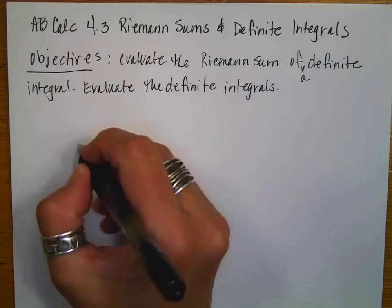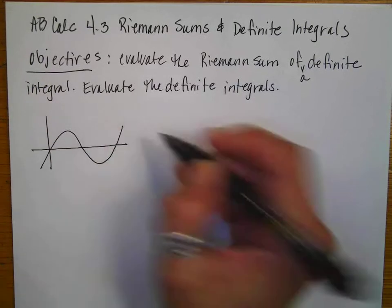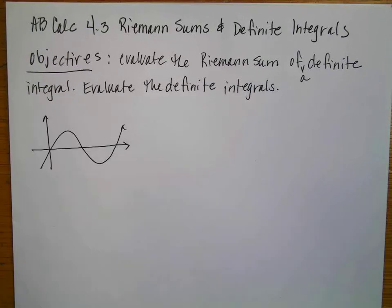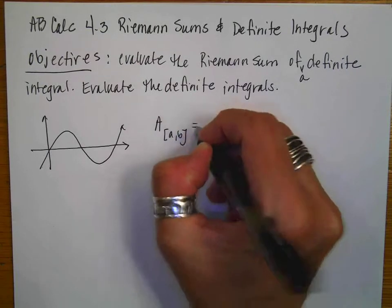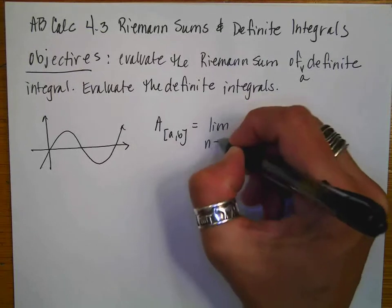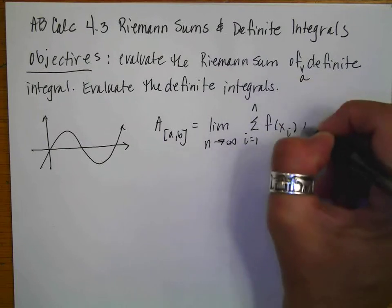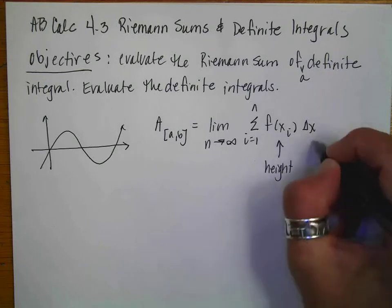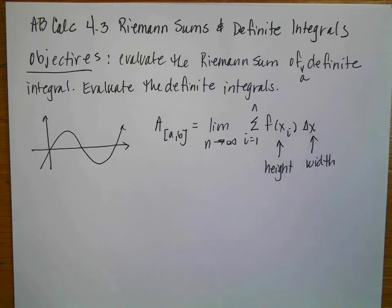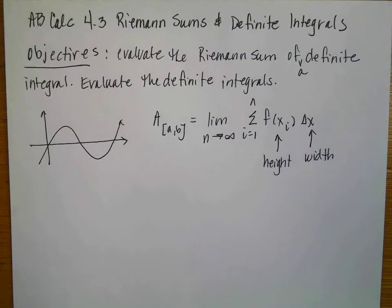In 4.2, we would find the area under a curve. When we would evaluate the area from A to B, we did that by doing the limit as n goes to infinity of the sum from i equals 1 to n of f of x sub i times delta x. This was the height of the rectangles, and this was the width or the base. But as you quickly found out, that is such a pain if you're going to try to evaluate the area under a curve. So we're going to use a different method.